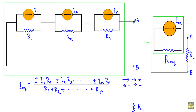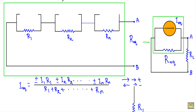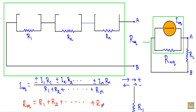How do we calculate R equivalent — the resistance with respect to terminals A and B? To calculate R equivalent, first replace the current sources with open circuits, meaning remove the current sources from the network. With the current sources removed, looking at terminals A and B, you will see that R1, R2, and Rn are all connected in series. So R equivalent equals R1 plus R2 plus Rn.